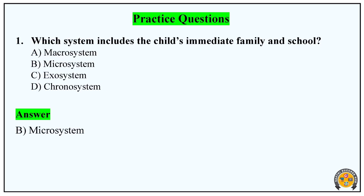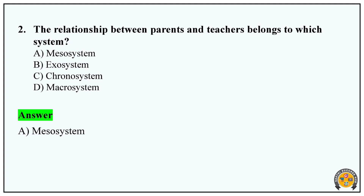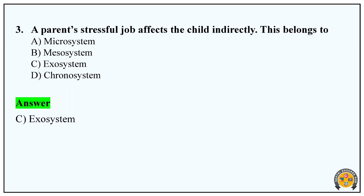Practice question one: Which system includes the child's immediate family and school? Answer: Micro System — option B. Second: The relationship between parents and teachers belongs to which system? Answer: Meso System — option A. Third: A parent's stressful job affects the child indirectly — this is which system? Answer: Exo System — option C. If you have any doubts, please comment, watch, subscribe, and share. Thank you, friends.